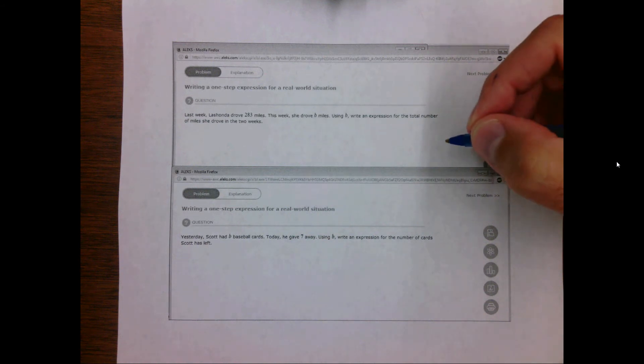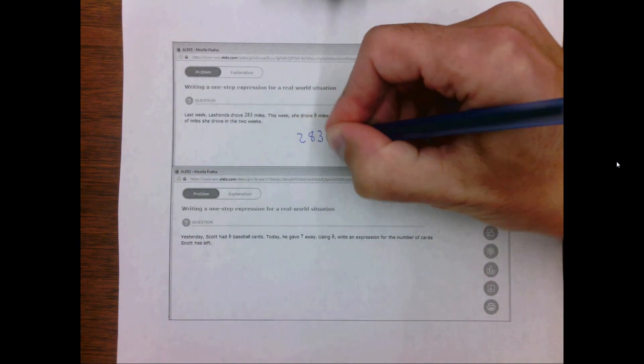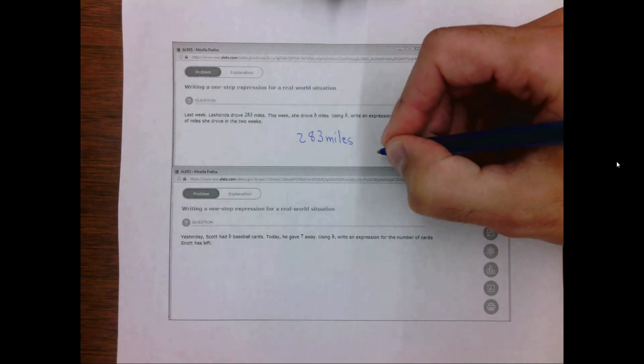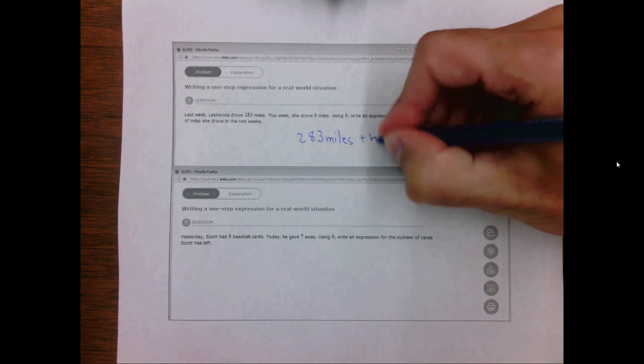There are essentially two ways you can do this and they're both the same. We know that the first week she drove 283 miles and the second week she drove B miles. We need to add those up so we could write 283 miles plus B miles.